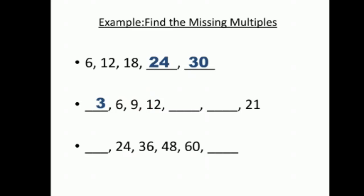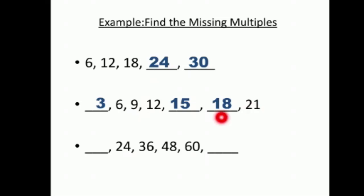هلأ أنا من بعد الـ twelve أي multiple عنده؟ لأنه أنا عم بمشي بهاي الطريقة، بزيد three بيعطينا fifteen، برجع بزيد three بيعطينا eighteen، والـ twenty-one موجودة. هيدا ملتبلز لأي نمبر؟ عن الـ twenty-four صار thirty-six.